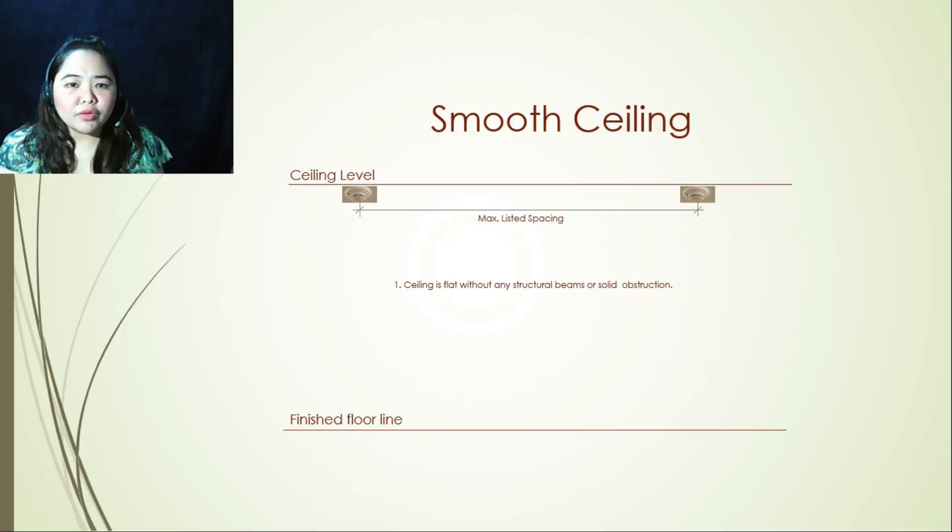So we have our first slide. As you can see in the illustration, we have a smooth ceiling. So a smooth ceiling is a flat ceiling without any structural beams or solid obstruction. If we have a smooth ceiling, we will follow maximum limited spacing. So if we're going to use NFPA standards, that's going to be 15 meters, but you can also refer to the manufacturer.